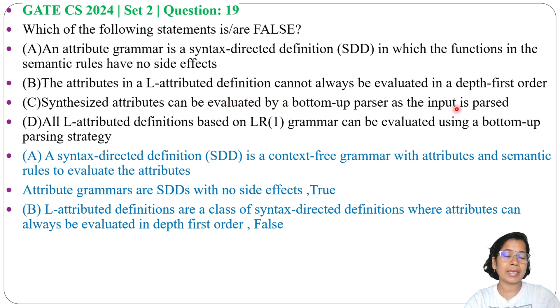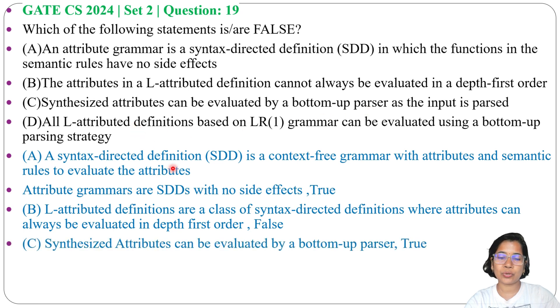Next, Option C: Synthesized attributes can be evaluated by a bottom-up parser as the input is passed. This is true. When data is passed from child to parent, it is synthesized, and it can always be evaluated by a bottom-up parser. So Option C is true.